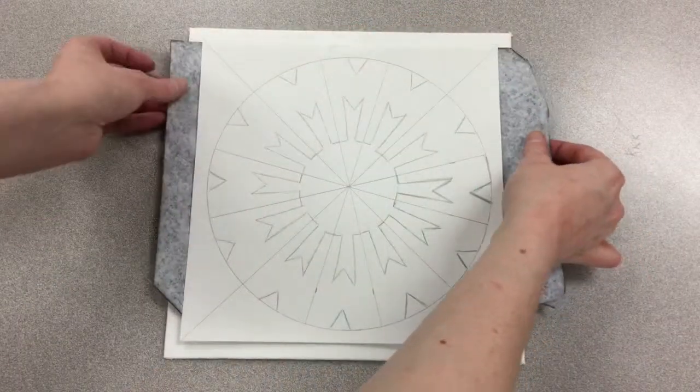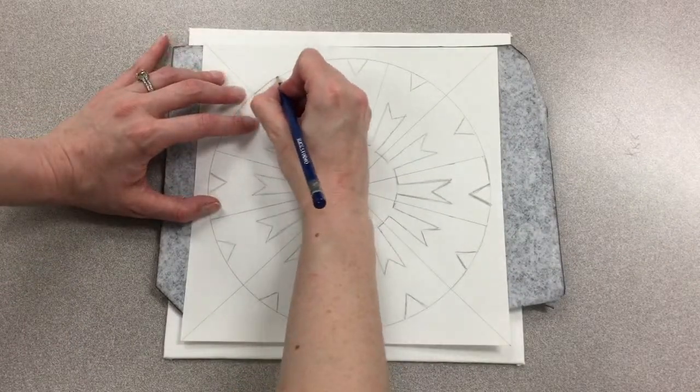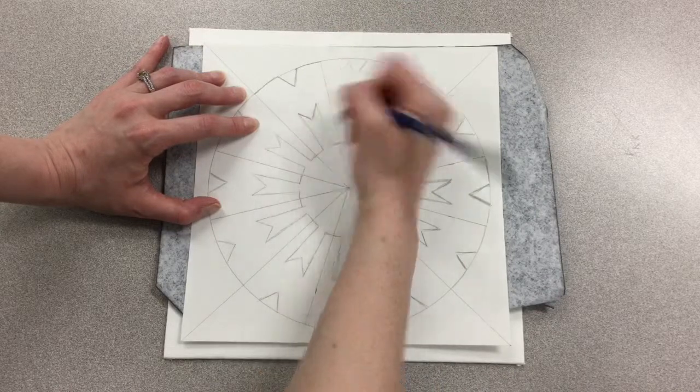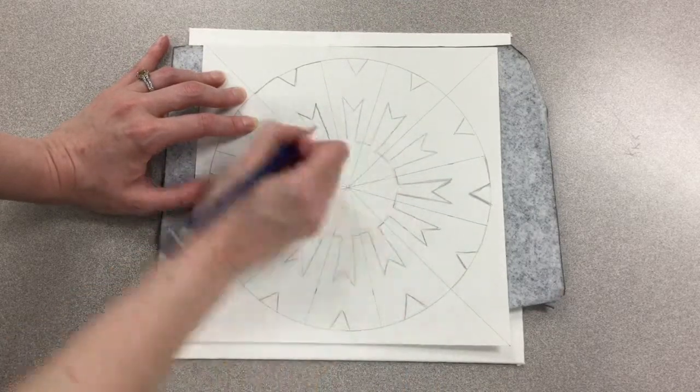I'll take a piece of tape and tape it in place so that my design can't move, and then I just take my pencil and draw on top of my design, and press down really hard so that my lines transfer to the canvas panel.